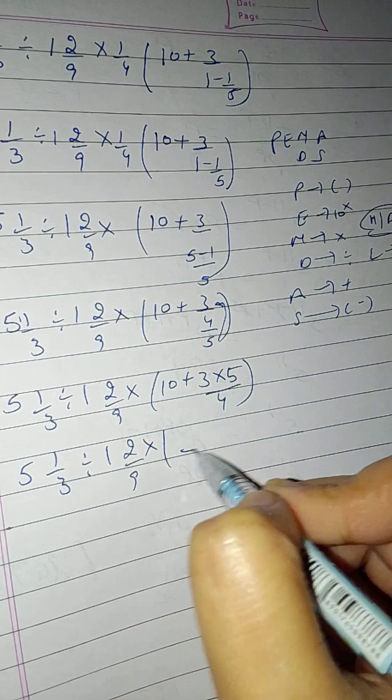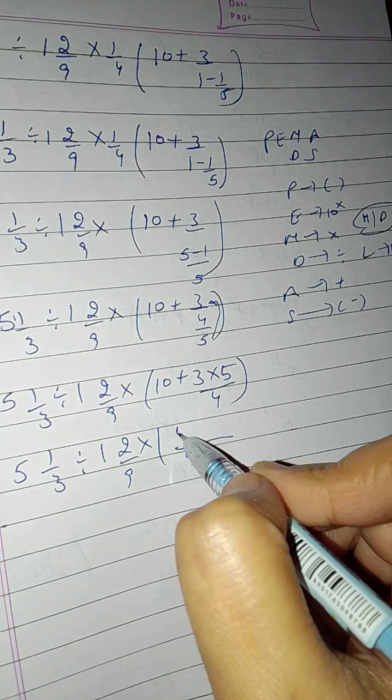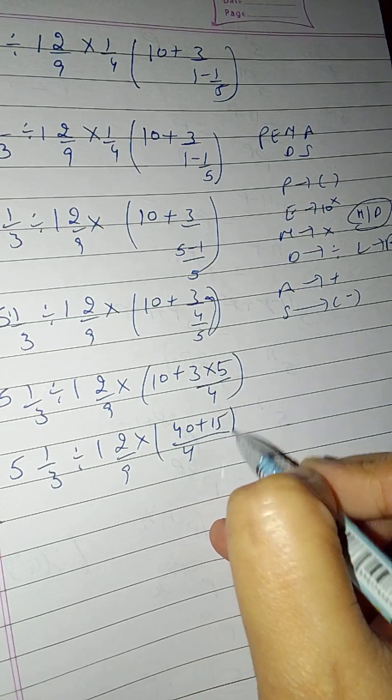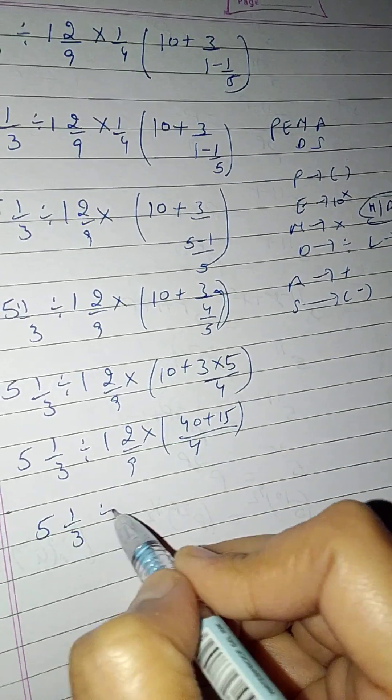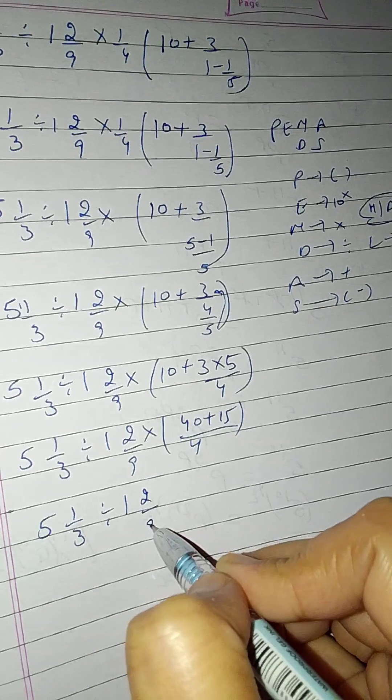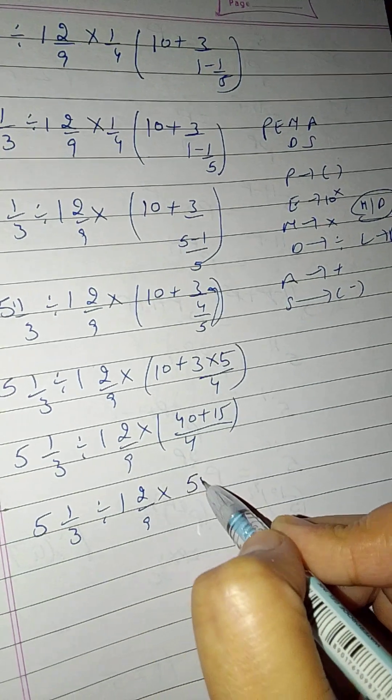5 1/3 divide 1 2/9 into 4, 40 plus 5 over 5. 5 1/3, 1 2/9 into 55 by 4.